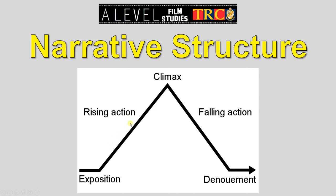Things will get gradually worse and worse and worse for our protagonists until it reaches a climax. Then there will be falling action — that can be a lot steeper, straight down, where you resolve your problems. And then the final part of the film is the denouement, where you wrap all the loose ends of your story up, cover up any plot holes, end the movie — everyone lives happily ever after. This is your typical narrative structure.